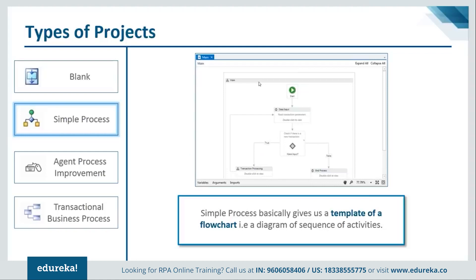A flowchart is useful when a single input can lead to two different sequences or activities. For example, you have true and false branches — if you log in as administrator, you can send email to any person; if not, you can only access your desktop. These two different outcomes from a single login input make a flowchart the right choice for this kind of use case.